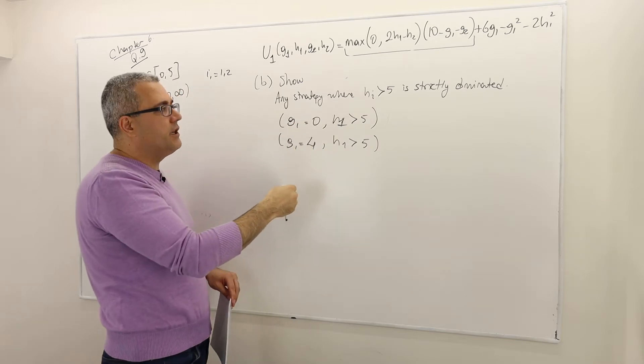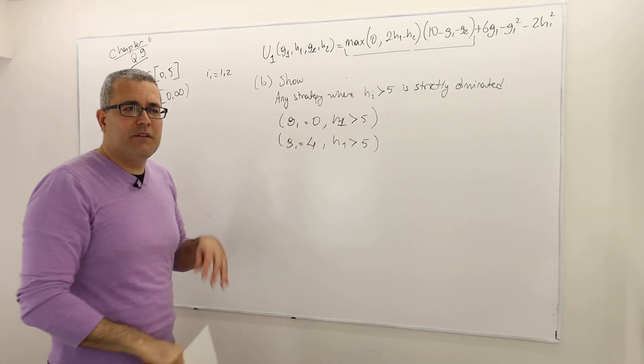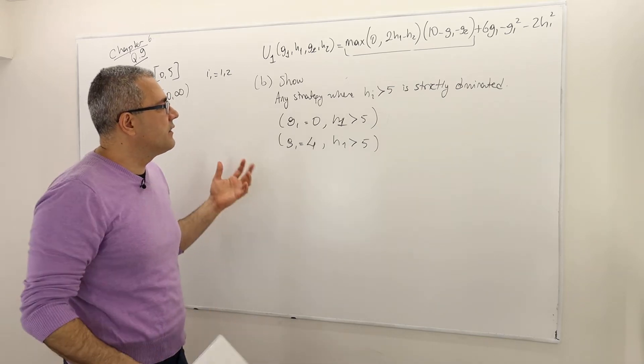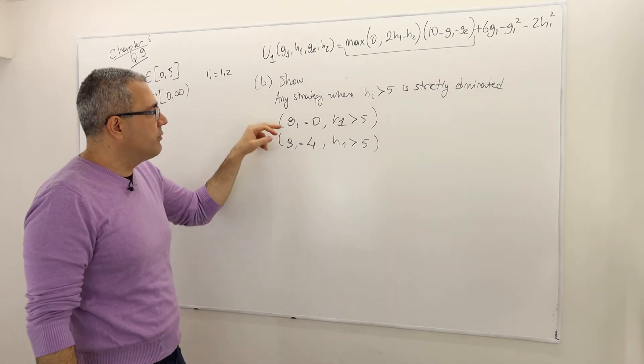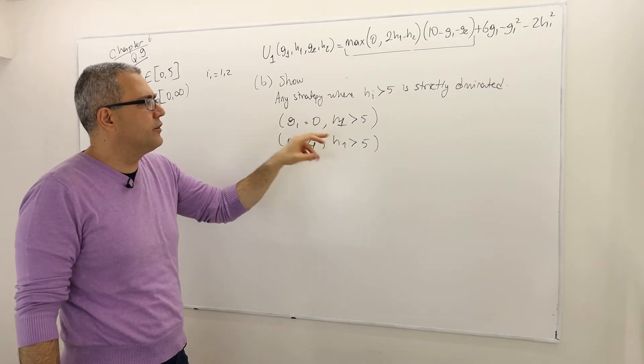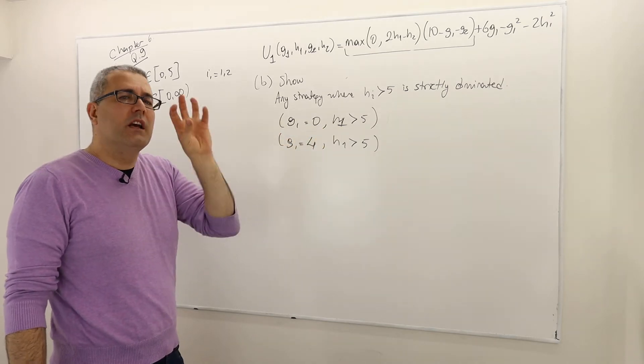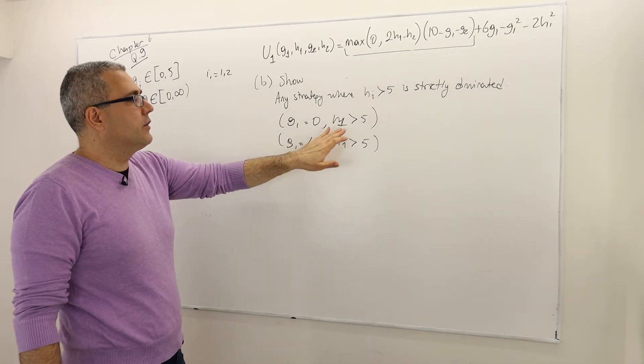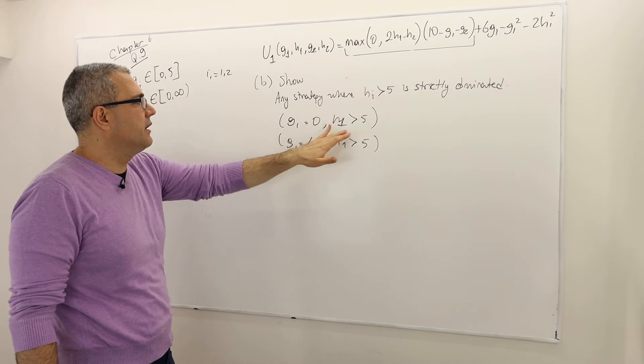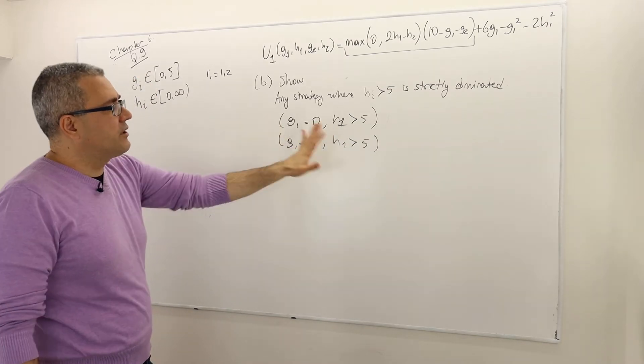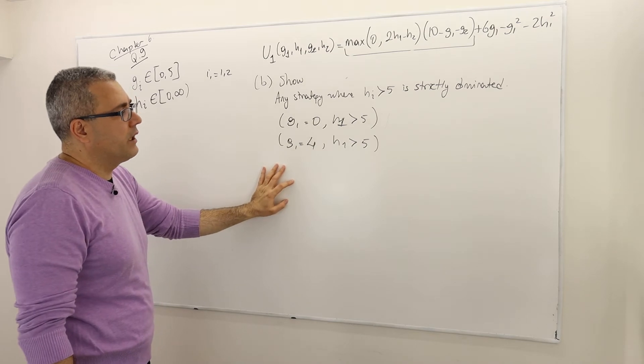So all those strategies are going to be dominated, all right? So that's a very general statement. It doesn't bound my attention to a specific G1, and it doesn't bound my attention to a specific H1. Just a specific group of H1 matters. So as long as H1 is higher than 5, strictly higher than 5, well, then regardless of G, that strategy is going to be dominated for player 1.